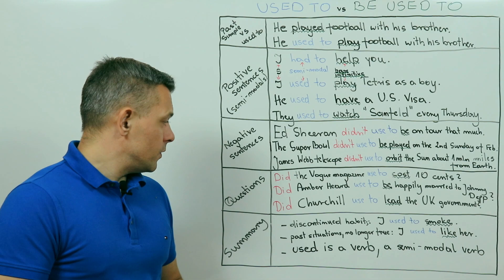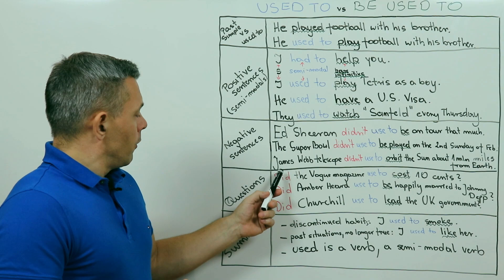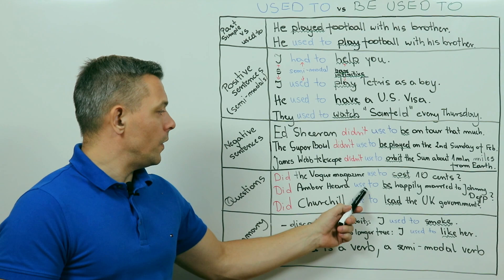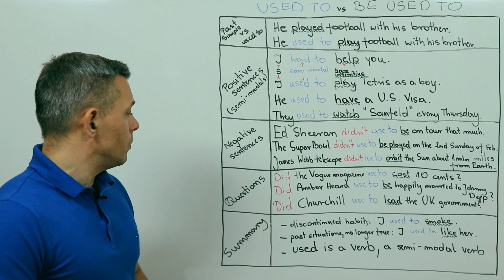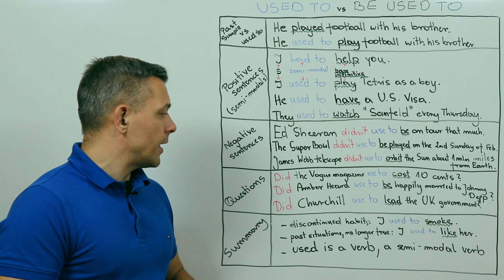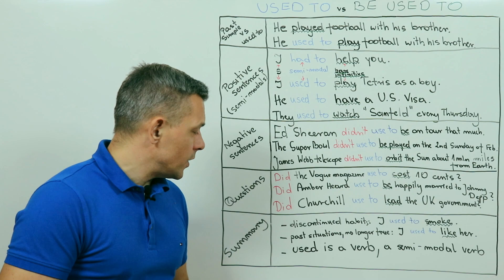Okay, let's sum up used to questions. First, did, then the subject, then used to with no D, and finally another verb in its bare infinitive form. Okay, so let's sum up the used to structure. It is used to talk about discontinued habits like in I used to smoke, I don't now, or to talk about past situations which are no longer true, like in I used to like her, now I don't.